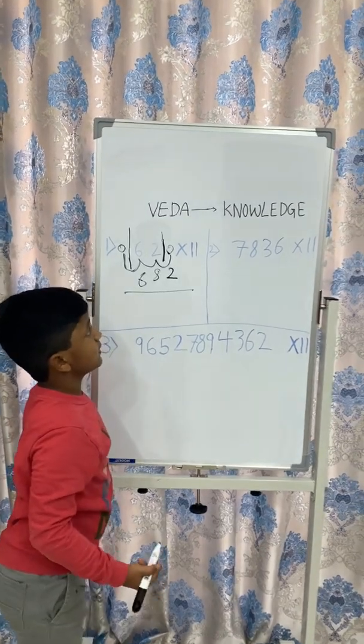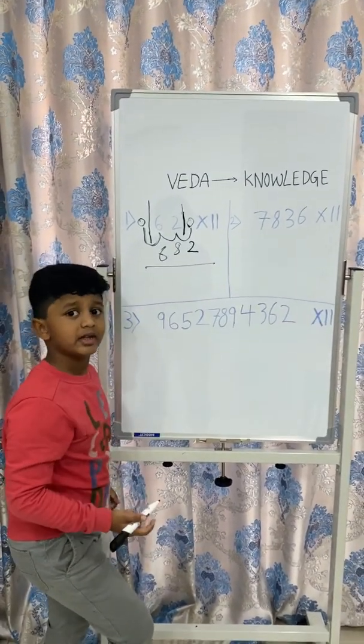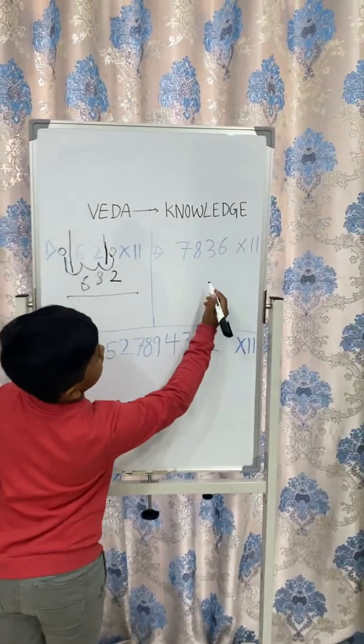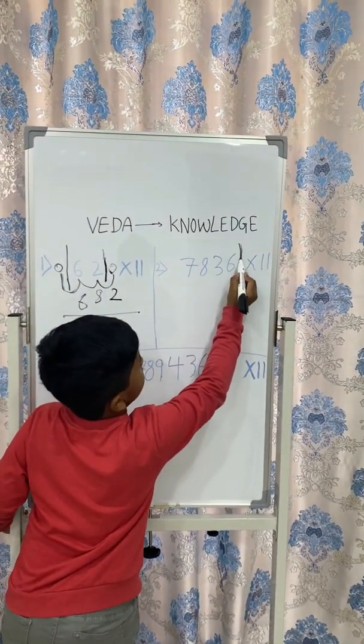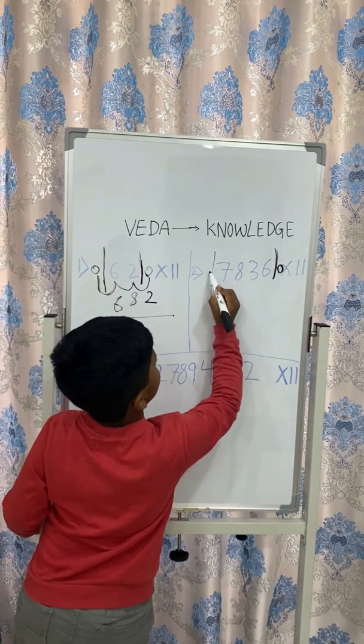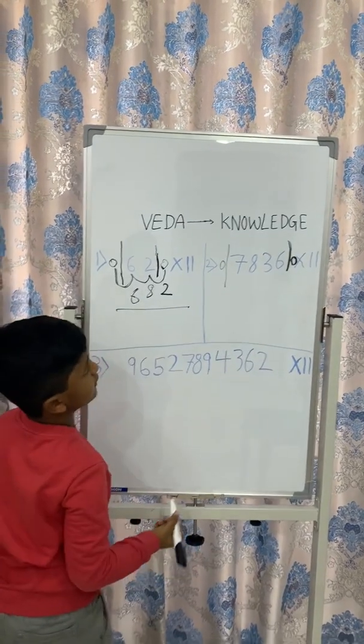Let's take example number 2. It is 4 digit multiplied by 11. First, you should add 0's at the end of the number and at the beginning of the number.